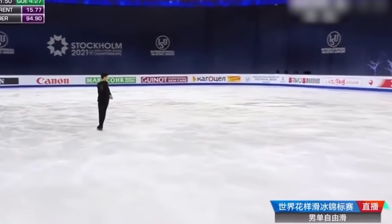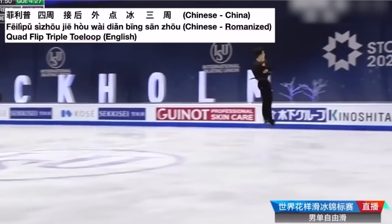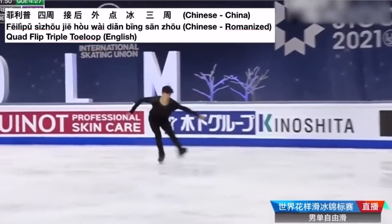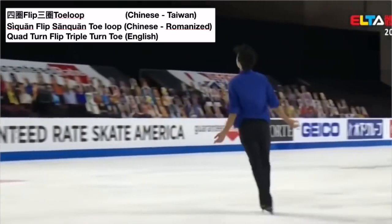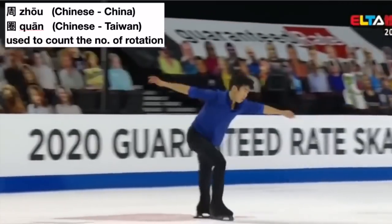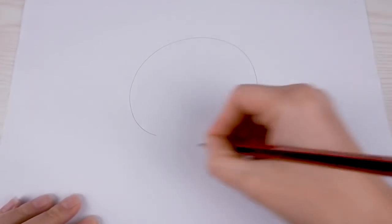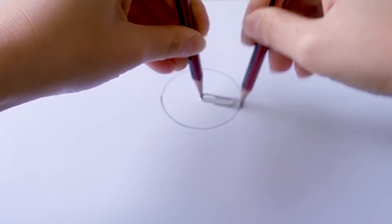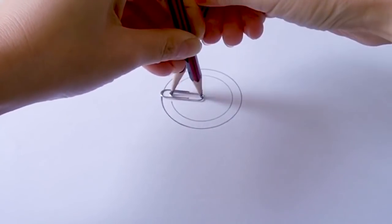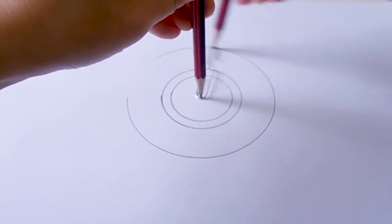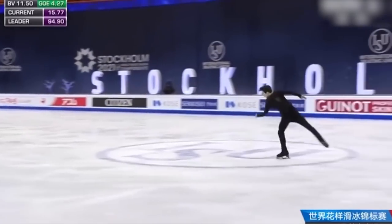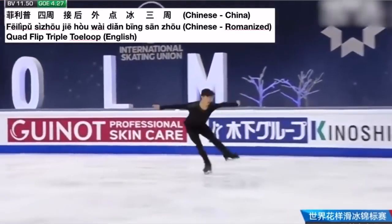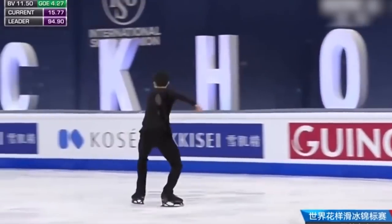First of all, in China they say the name of the jump first and then the number of rotations, but in Taiwan they say the number of rotations first and then the name of the jump. Also, Taiwanese use 'qian' while the Chinese use 'zhou.' 'Qian' refers to the shape of a circle while 'zhou' refers to the cycle or the movement of going around in cycle. In this case 'qian' is an adjective to describe the name of the jump, while 'zhou' is like an adverb placed after the name of the jump.